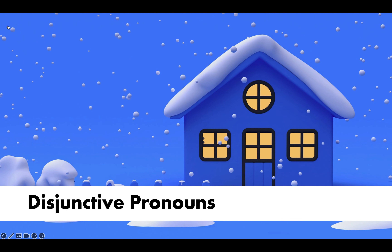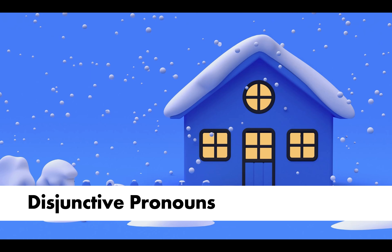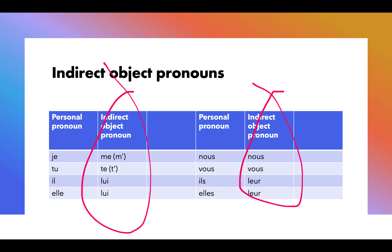Today we're going to learn about disjunctive pronouns. You have just learned about indirect object pronouns. Indirect object pronouns replace an indirect object, and an indirect object is the recipient of the action of a verb. For example, I throw the ball to Pierre. Pierre is the indirect object, and if I don't want to keep saying Pierre over and over again, I can replace it with him, or lui. Lui is the indirect object pronoun — and that's not what we're doing now. But we study disjunctive pronouns after indirect object pronouns because they have so much similarity.